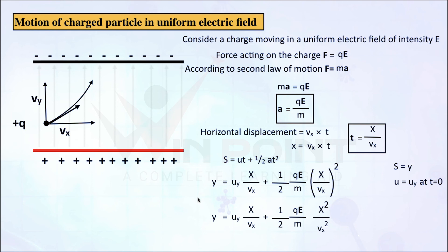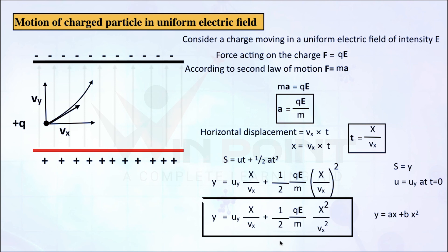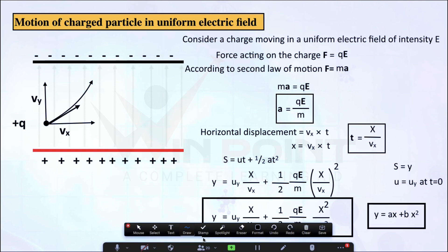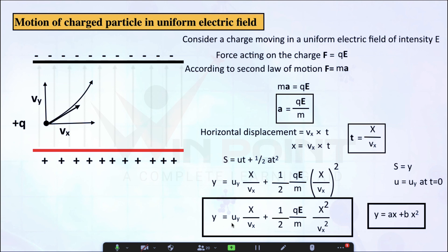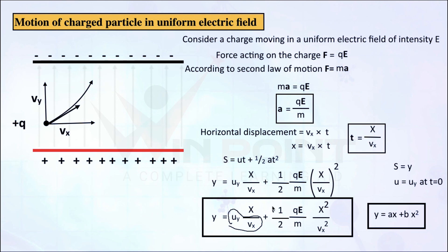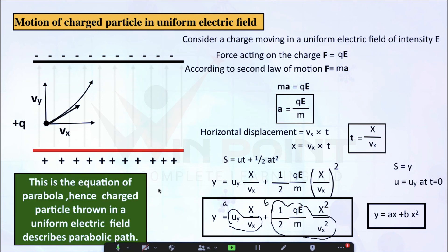We compare this equation with y equal to Ax plus Bx squared. Since Uy, Vx, Q, E, and M are all constants, both A and B are constants. These two equations are the same form — this is the equation of a parabola. Hence, a charged particle thrown in a uniform electric field describes a parabolic path.